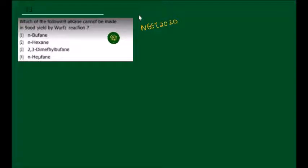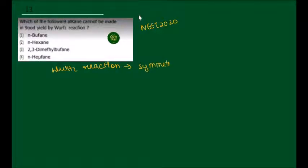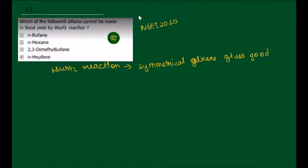Which alkane will not give us a good yield in Wurtz reaction? We have read in Wurtz reaction that the symmetrical alkane gives good yield by Wurtz reaction, and the unsymmetrical alkane does not give good yield by Wurtz reaction. We need to determine which of the 4 alkanes is symmetrical and which is unsymmetrical.